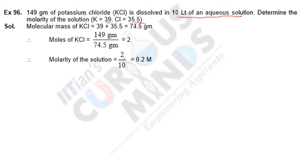Let us find how many moles are in 10 liters. We have 149 grams of mass, so we can find moles using the formula: moles equals mass divided by molar mass.